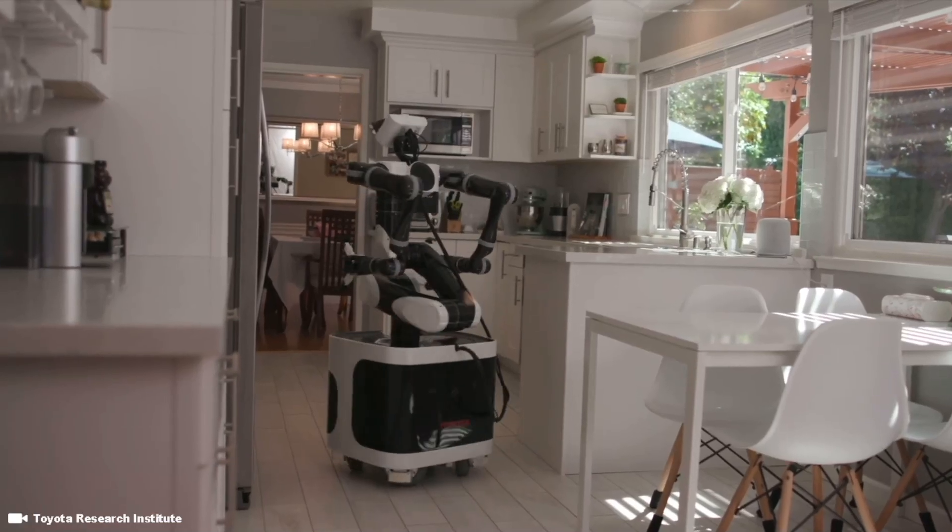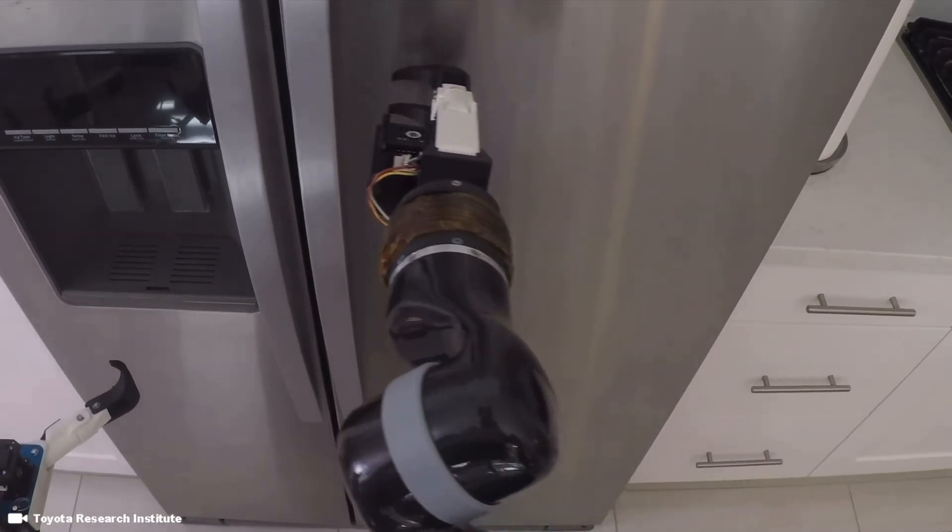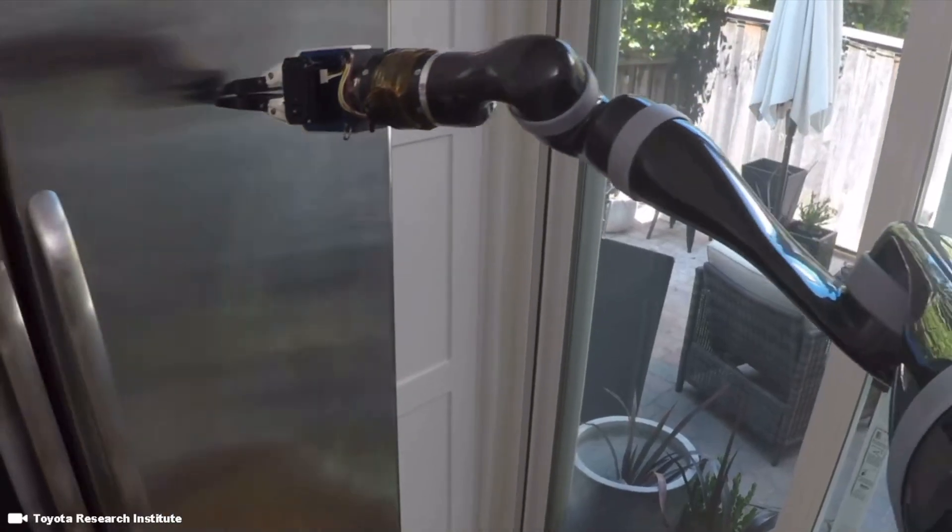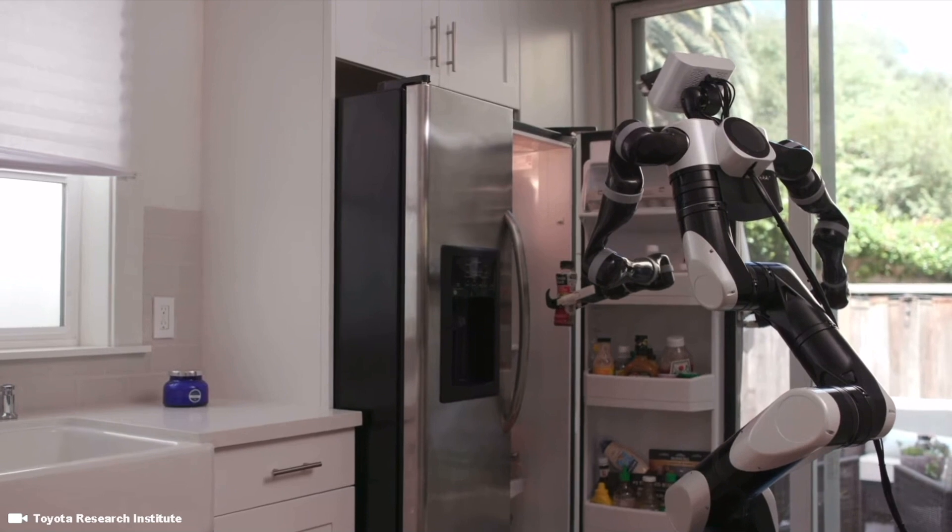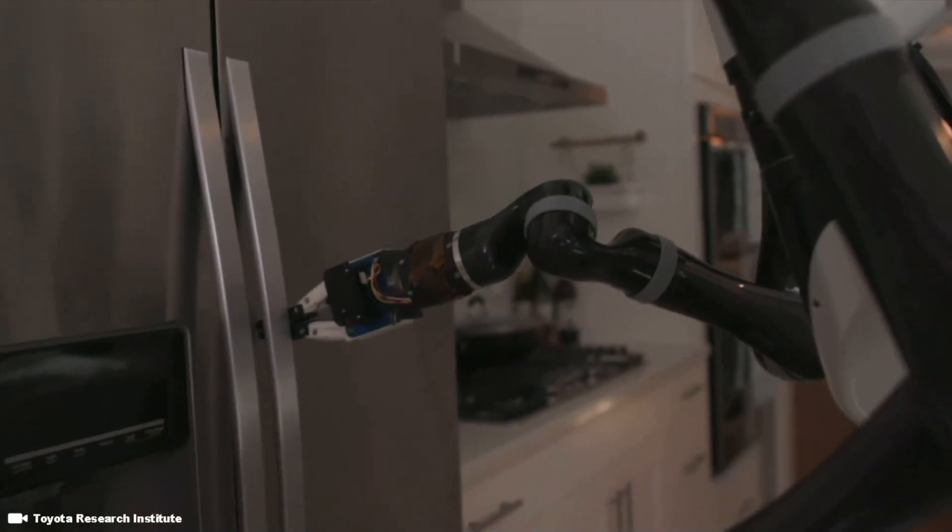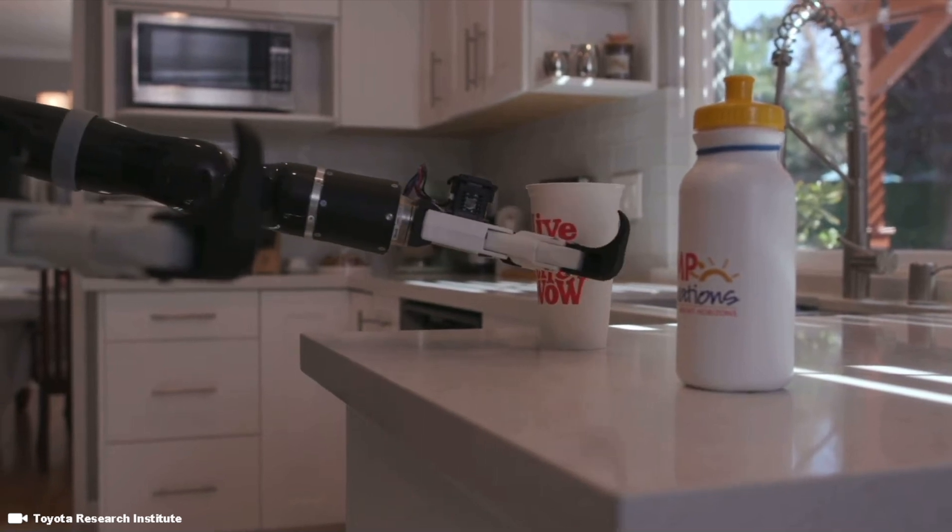For example, we can teach the robot how to open a refrigerator. We show the robot where to place its gripper, how to hook the handle, and also how hard to push. We can teach the robot about what objects in the scene are important, or what parts of an object are important, whether the object is a bottle or the refrigerator handle. Whichever the object is, wherever the object is, we can teach the robot how to handle it.